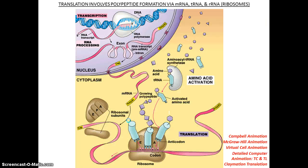Here's the whole picture: you start with DNA, which is transcribed into mRNA. The mRNA is further processed in eukaryotes — this is called RNA processing — where you add the poly-A tail and the 5' guanine cap, and introns are spliced out. Once you have your final RNA transcript, it leaves the nucleus to the ribosome where translation occurs and you get your polypeptide. Watch the animations — they'll really help you picture the whole process.